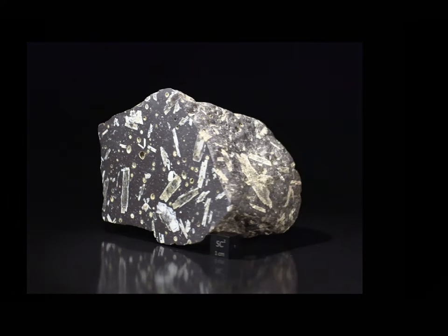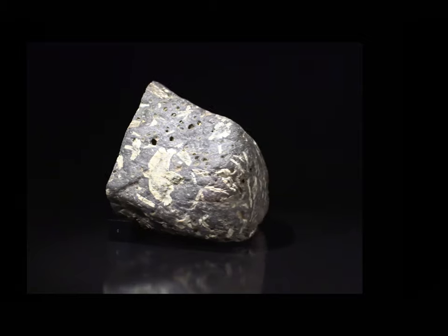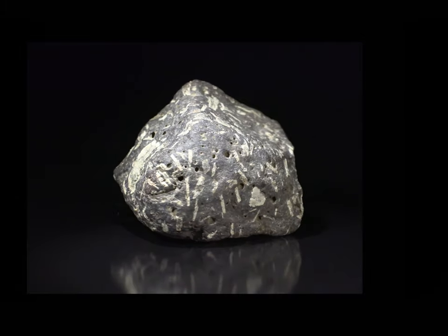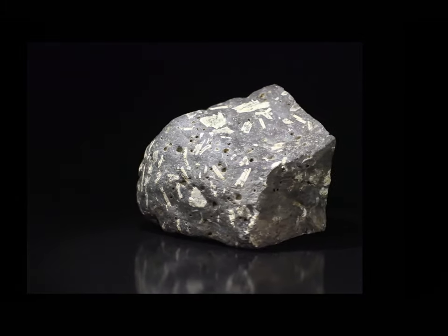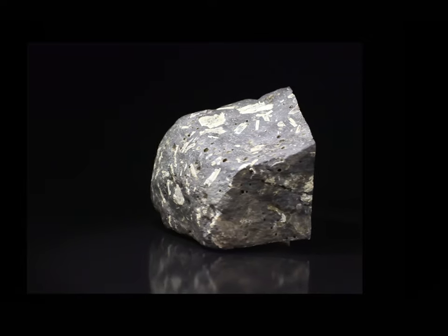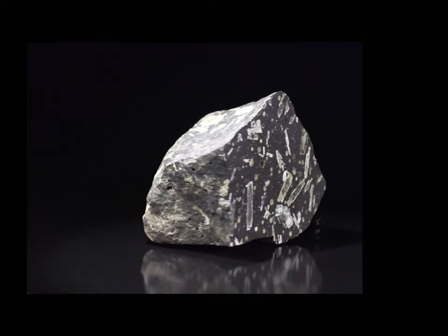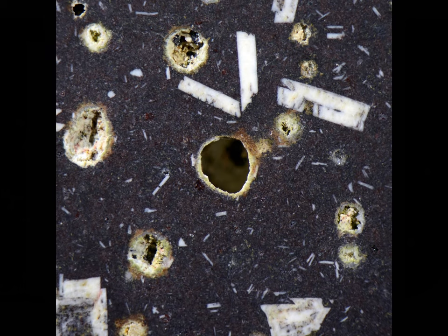Then the basalt was subject to the actions of surface processes — weathering and erosion. Water made its way into the rock, carrying dissolved ions with it. The vesicles were areas that allowed the water to accumulate and allowed those ions to precipitate new minerals, as can be seen in this view.